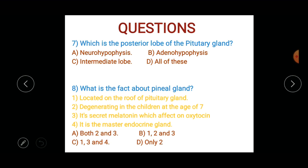Which is the posterior lobe of the pituitary gland — what is its name? Options: A) neurohypophysis, B) adenohypophysis, C) intermediate lobe, or D) all of these.